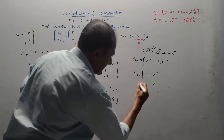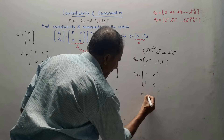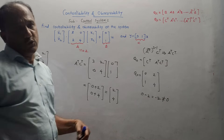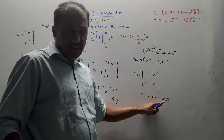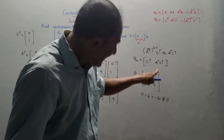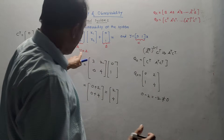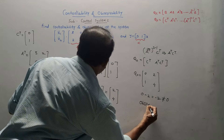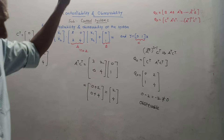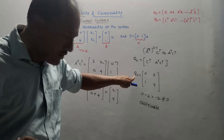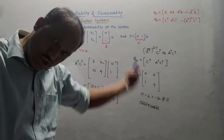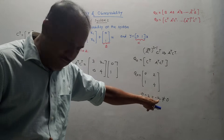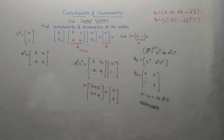A transpose into C transpose equals [3, 2; 0, 4] into [0; 1], giving [0 plus 2; 0 plus 4] equals [2; 4]. Placing values in Q0 and solving the determinant: 4 into 0 minus 2 into 1 equals minus 2, which is not equal to 0. When the answer of the determinant is not equal to 0, the rank of this matrix equals N where N equals 2. So the system is completely observable.